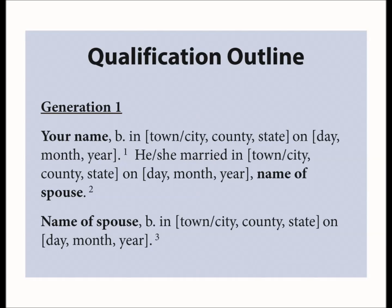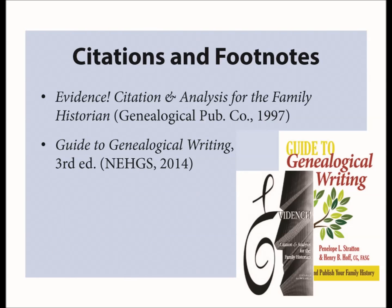Many societies require birth, marriage, and death certificates for those first three generations. Because every society uses their own specific citations and abbreviations, I recommend using Evidence, Citation and Analysis for the Family Historian or the newly published Guide to Genealogical Writing by our own Penny Stratton when creating your qualification outline. I would not waste time creating an outline that used the citations for a specific society — these two books provide detailed citations that can be retrieved again if necessary. Since lineage societies tend to use abbreviated citations, those may be confusing later on, especially if you plan to apply to more than one society.